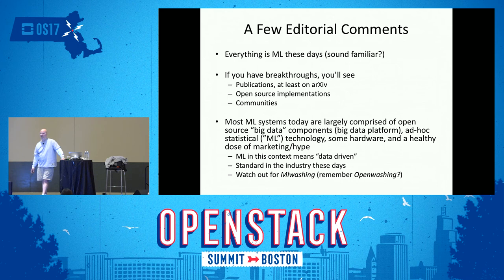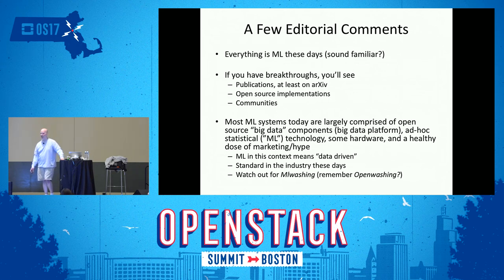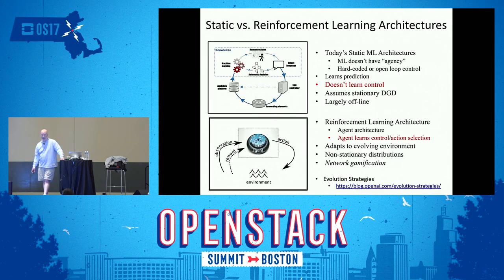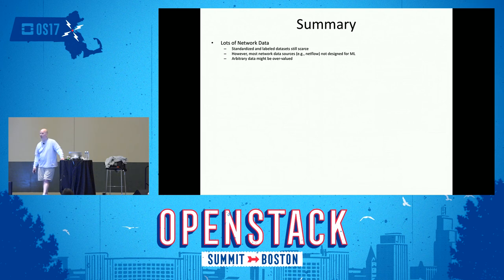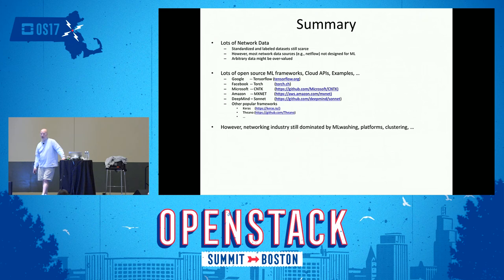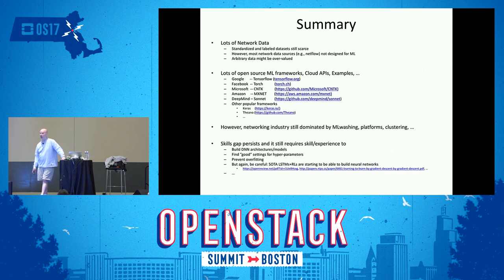Remember open washing? In the early days of OpenDaylight and when I was working in the Linux Foundation, open washing meant you call your thing open source and get all the good benefits of open source. Well, now there's ML washing — you just call it ML whatever it is. We also need to learn from our environment. Summary: lots of network data — networks throw off tons of data — but it's not standardized, not labeled, it's proprietary. All these things make it hard to use. There are millions of open source frameworks and cloud APIs, but we're still dominated by ML washing, clustering hype, and a persisting skills gap.